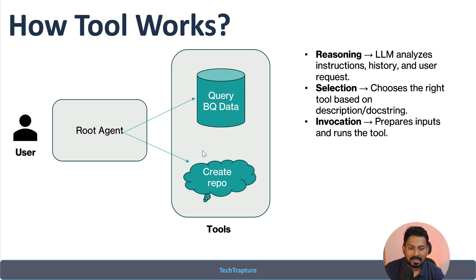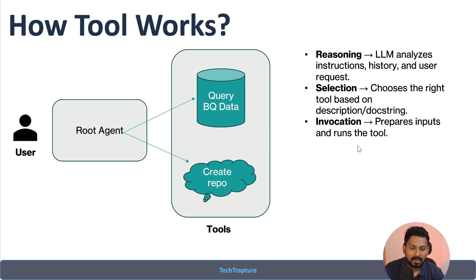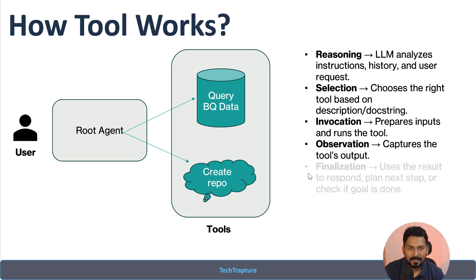Once it decides which tool to use, it invokes that tool along with input parameters. For example, if the user says 'create a GitHub repository for me,' the reasoning capability identifies this is about creating a GitHub repository. It then creates an invocation request along with parameters — in this case the repository name — and invokes the tool with those parameters. It captures the tool's output, whether the repository creation was successful or failed, and passes that message back to the user.